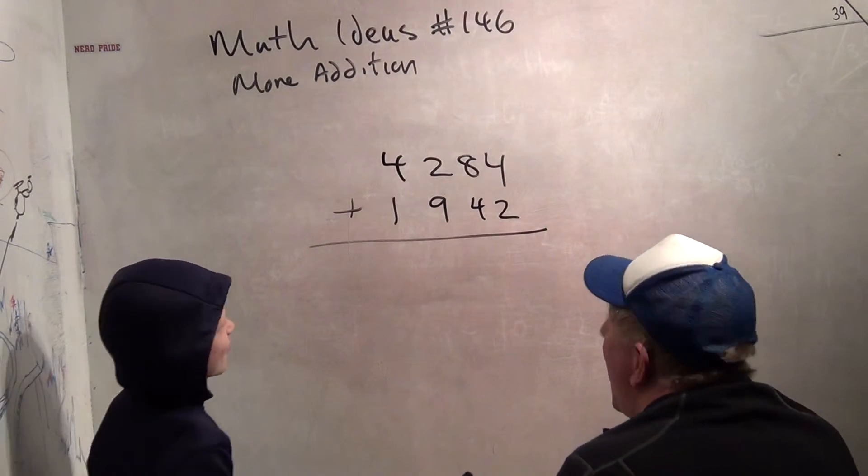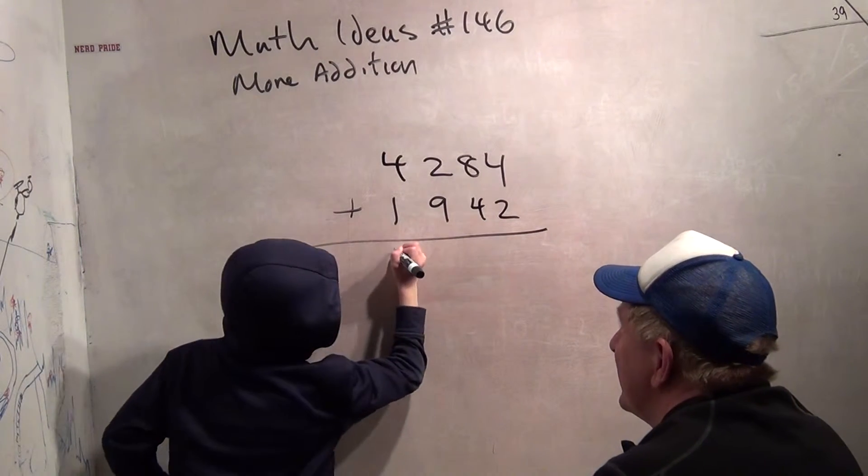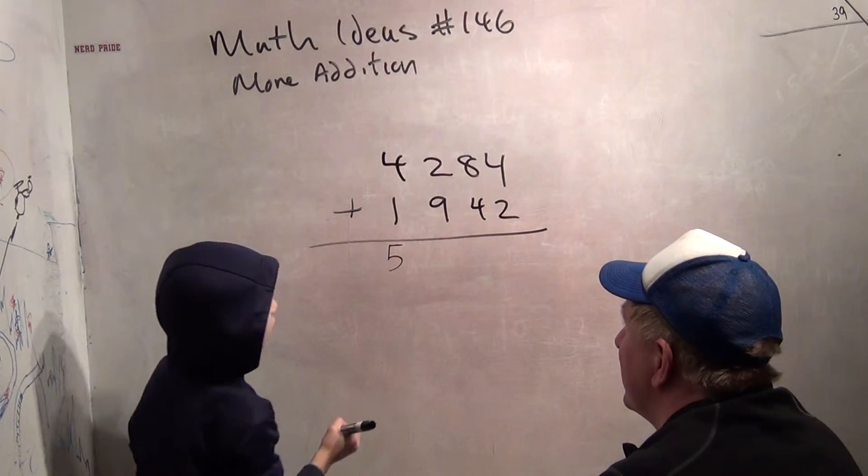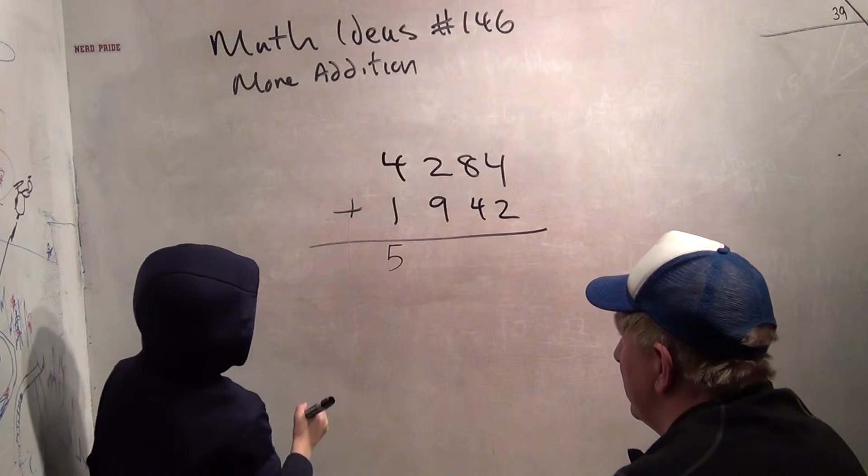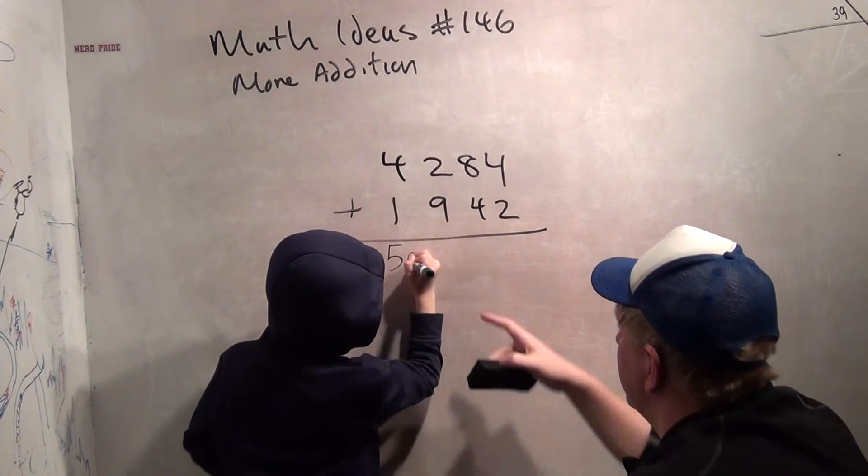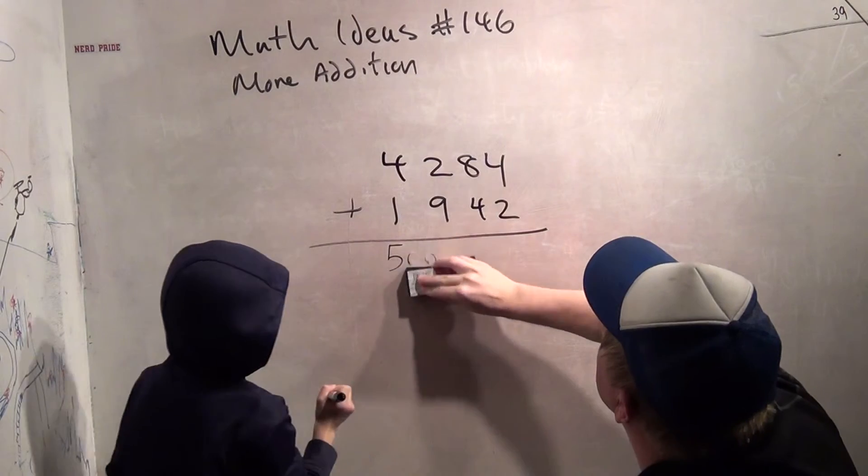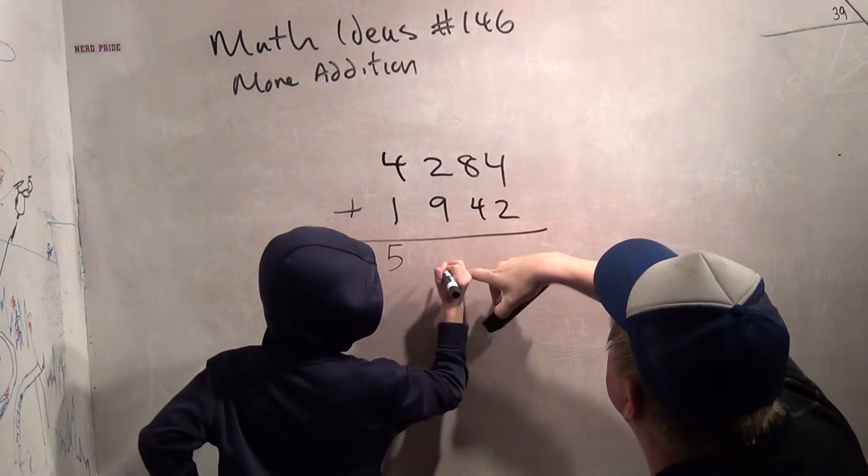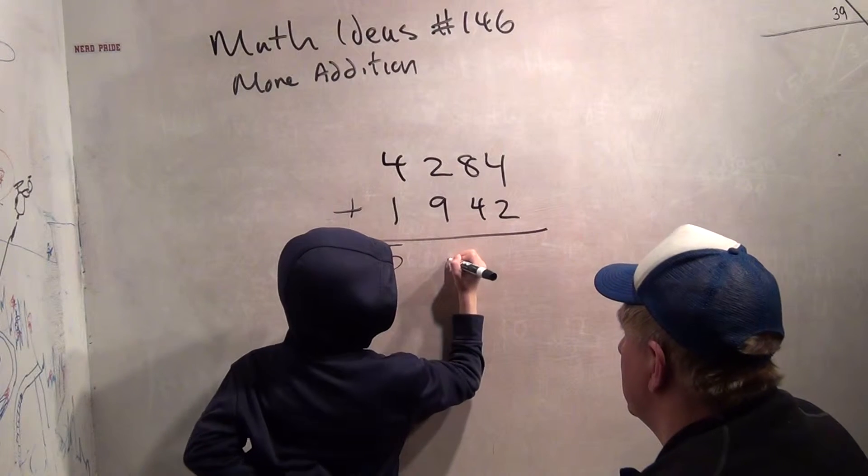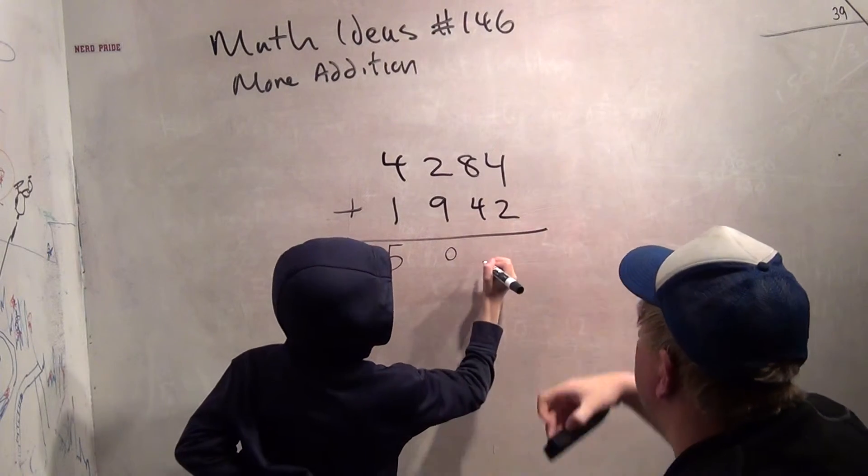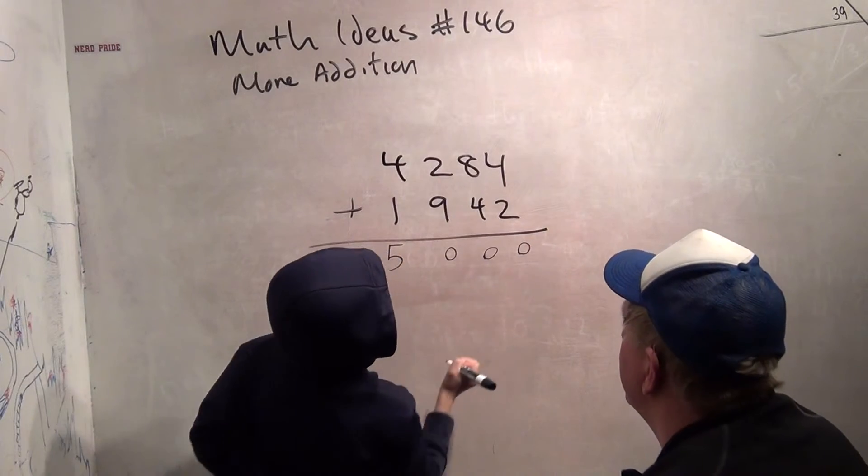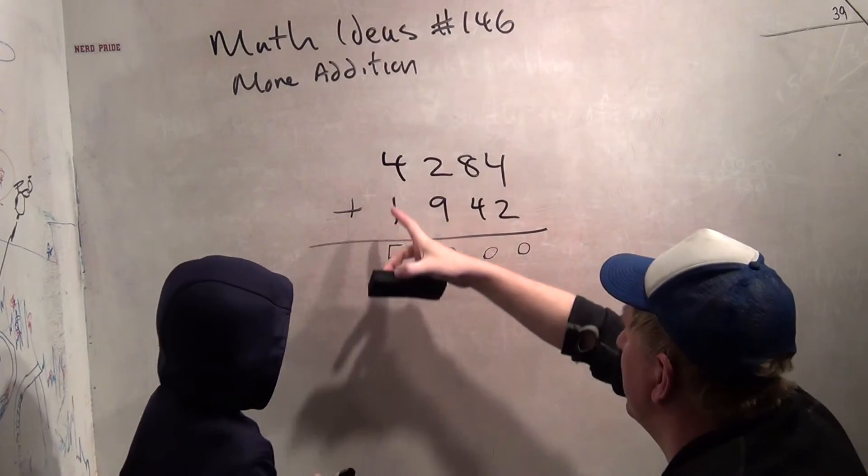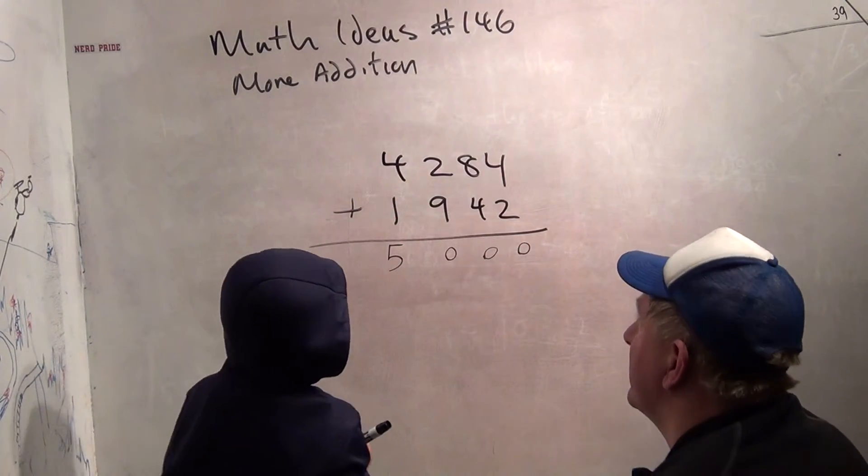4,000 plus 1,000 is 5,000. Right, make sure you write your 1,000. Try to line up the digits. So you've got the 5 in this column, put the 0, the first 0 in that column. Put the next 0 in that column. Put the next 0 in that column.